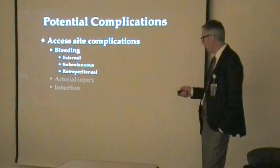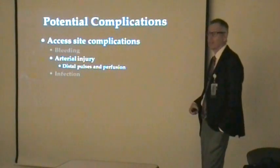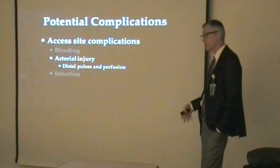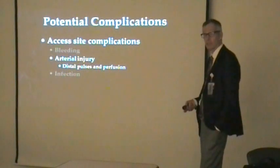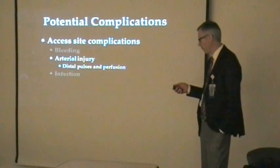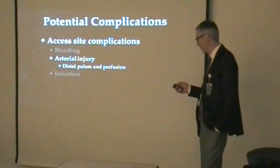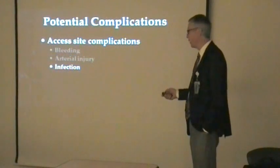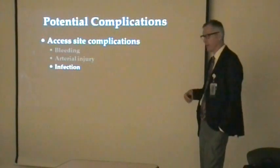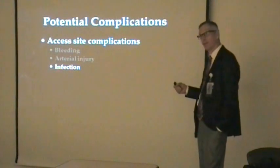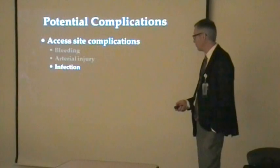Arterial injury is uncommon but that's why we check distal pulses — we need to know what they were like before the procedure. A dissection or closure device clotting off the artery causes loss of the leg pulse, which is an emergency. For patients with vascular disease who didn't have good pulses, monitor perfusion status. Infection is really more theoretical — I've never seen a simple in-and-out angiogram get infected, though implanted closure devices can rarely become infected.